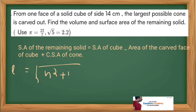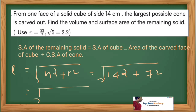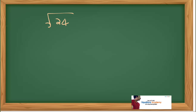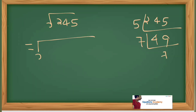Slant height L of the cone equals root of h squared plus r squared. This equals root of 14 squared plus 7 squared, which is root of 196 plus 49, equal to root of 245. Root 245 can be written as root of 7 squared into 5, which gives 7 root 5 centimeters. So the slant height is 7 root 5 centimeters.